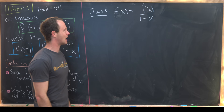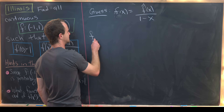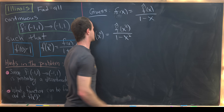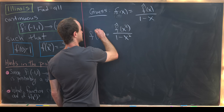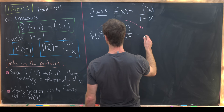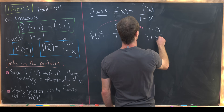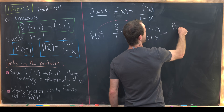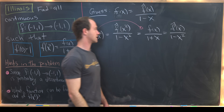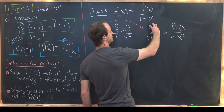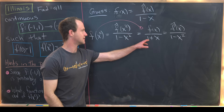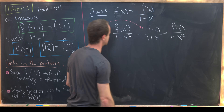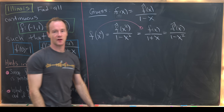Now let's calculate. Plugging x² in, we get f(x²) = f̂(x²) / (1 - x²). But from our functional equation, we know f(x²) = f(x) / (1 + x). Writing out f(x) using our assumed form gives f̂(x) / (1 - x²). So we have f̂(x²) / (1 - x²) from the assumption, and f̂(x) / (1 - x²) from substituting f(x) = f̂(x) / (1 - x) and combining denominators.